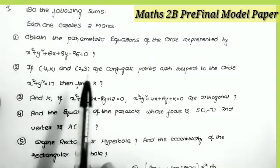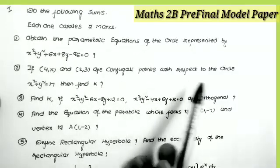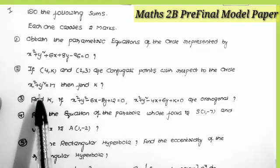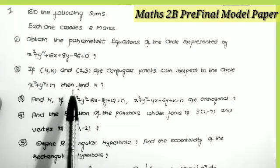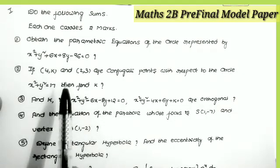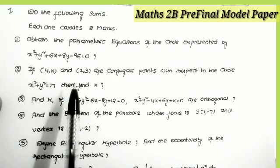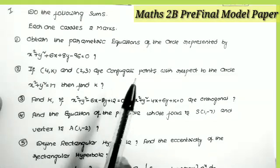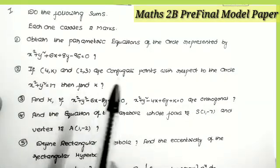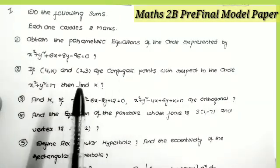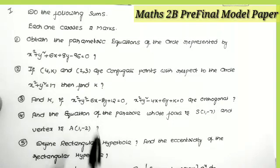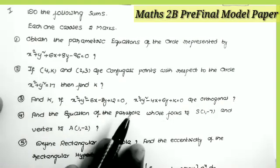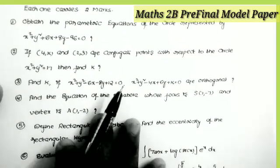The second question: if the points (4, k) and (2, 3) are conjugate points with respect to the circle x² + y² = 17, then find the value of k. This is a very easy and most important question. The given condition is that the points are conjugate points, so the condition is S₁₂ = 0. Simply apply that condition S₁₂ = 0.